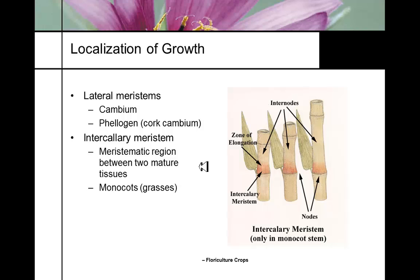The intercalary meristem is a meristematic region that occurs in monocots and grasses. It's the meristematic region between two mature tissues — in bamboo or dracaena, the intercalary meristem is at each node, and that's what expands. You've witnessed this if you've seen a field of sweet corn blow over — it grows back up because the intercalary meristem becomes embryonic and grows to make the plant upright again. When you mow grass, the intercalary meristem grows and puts more grass out.